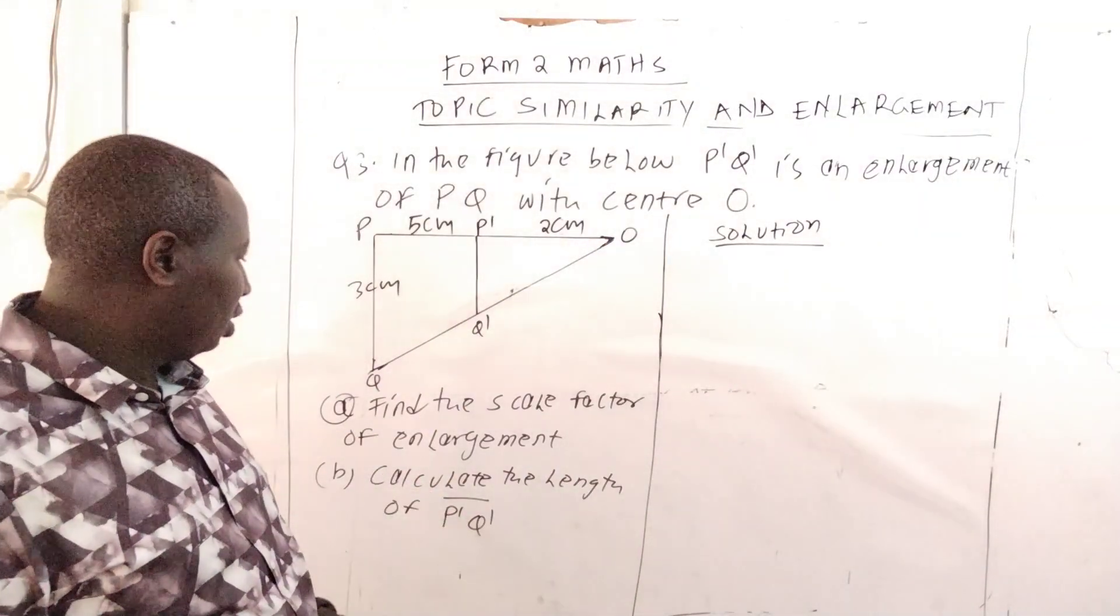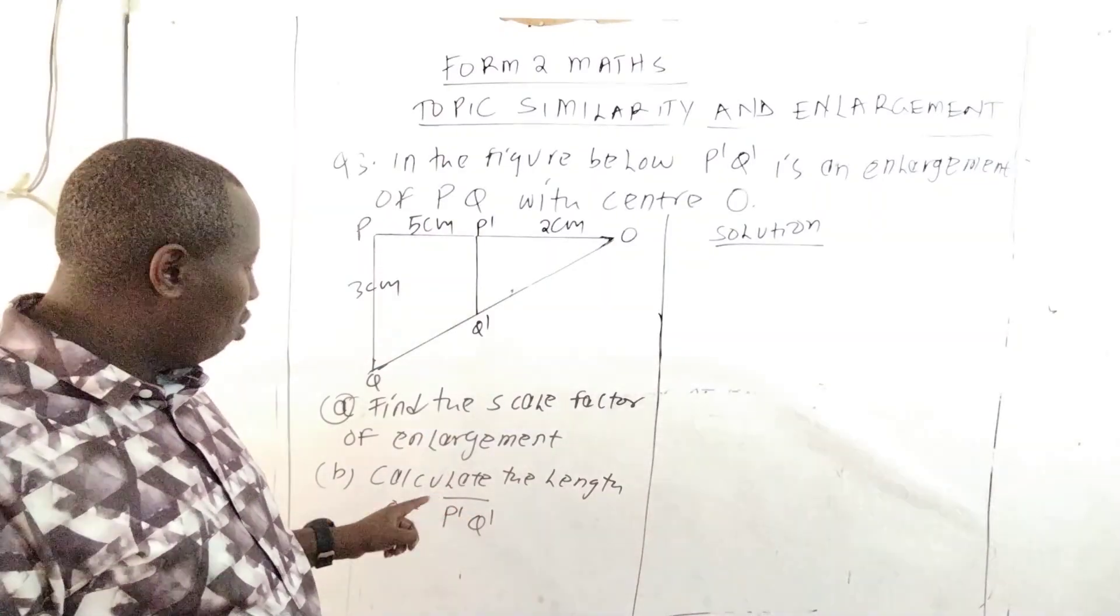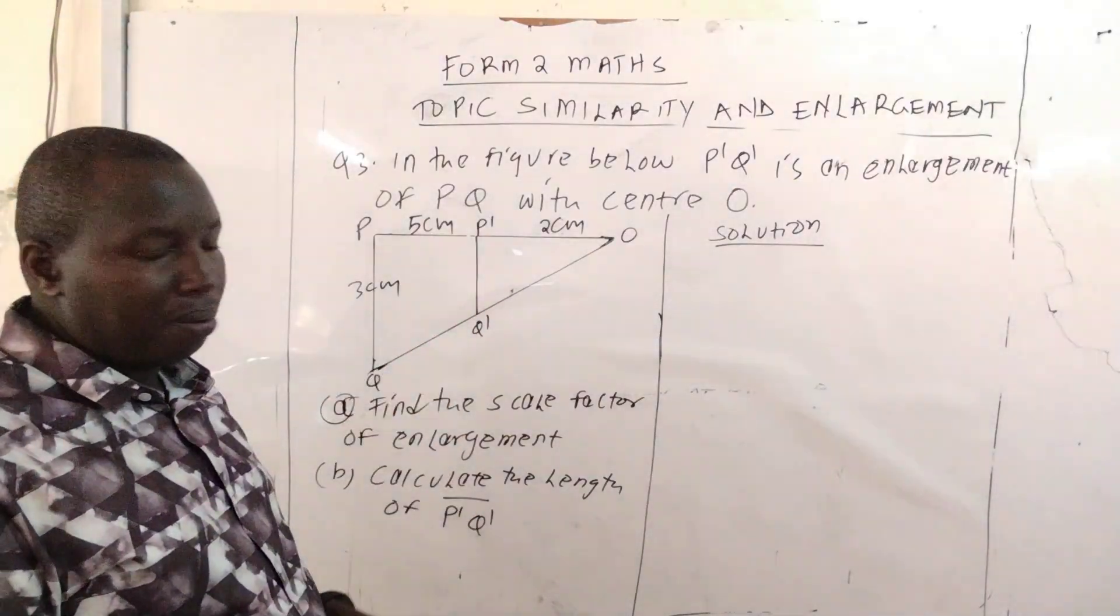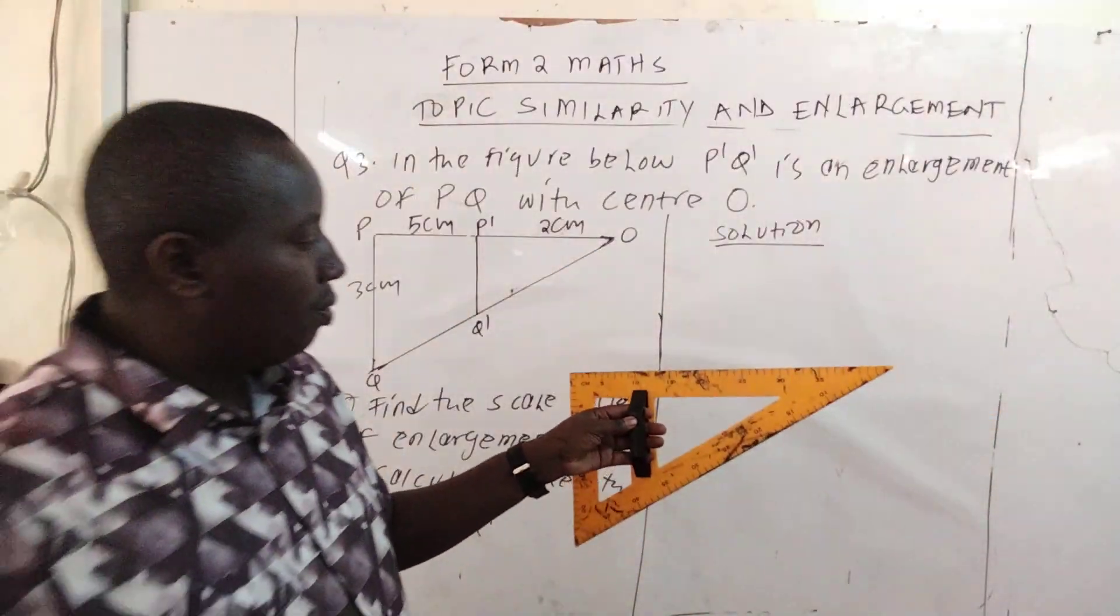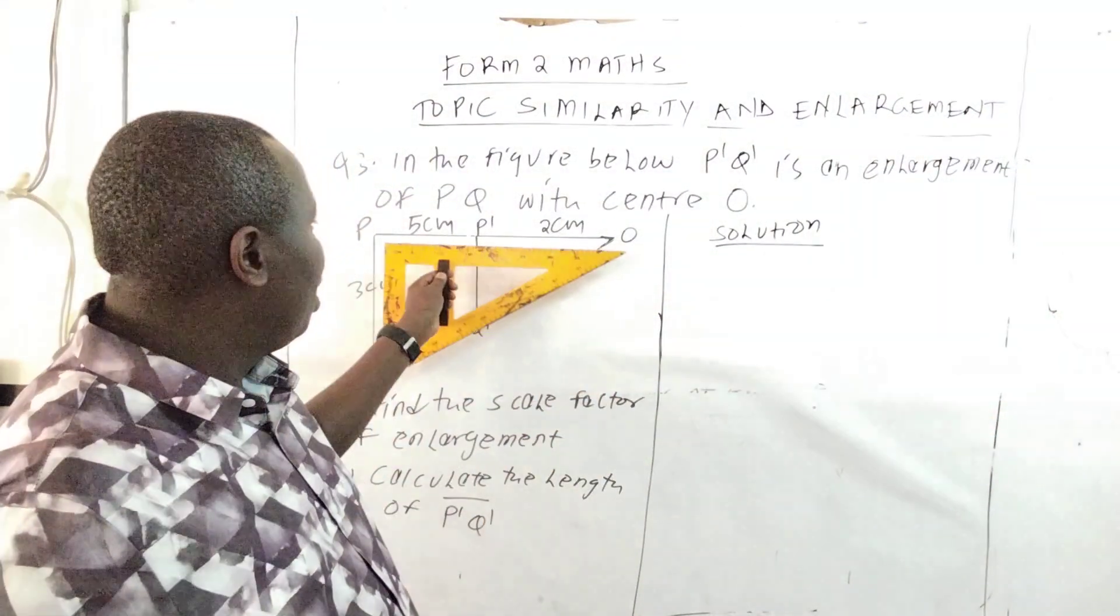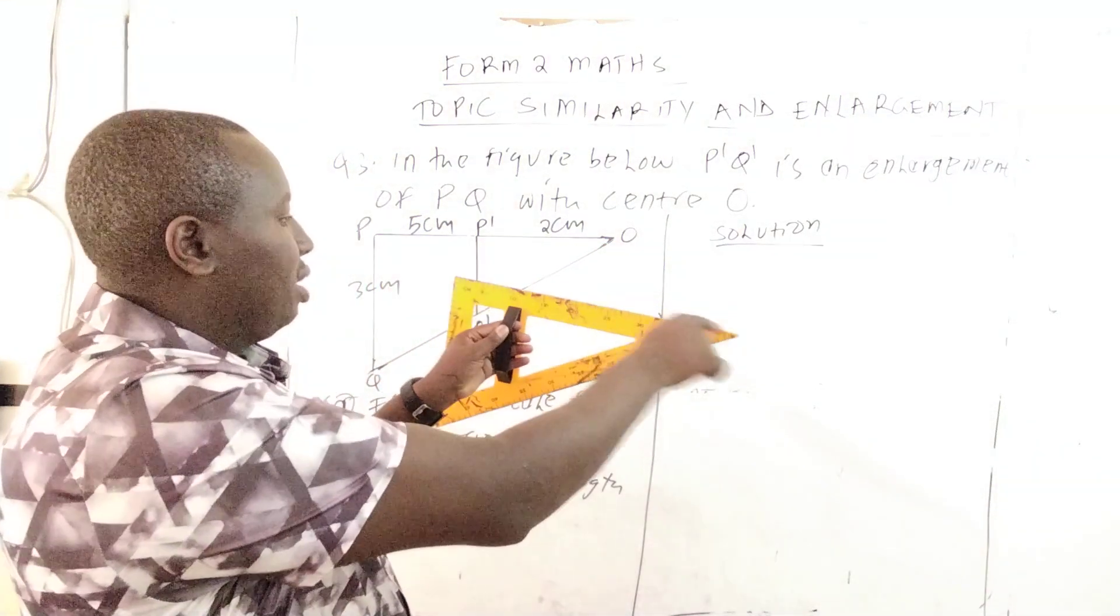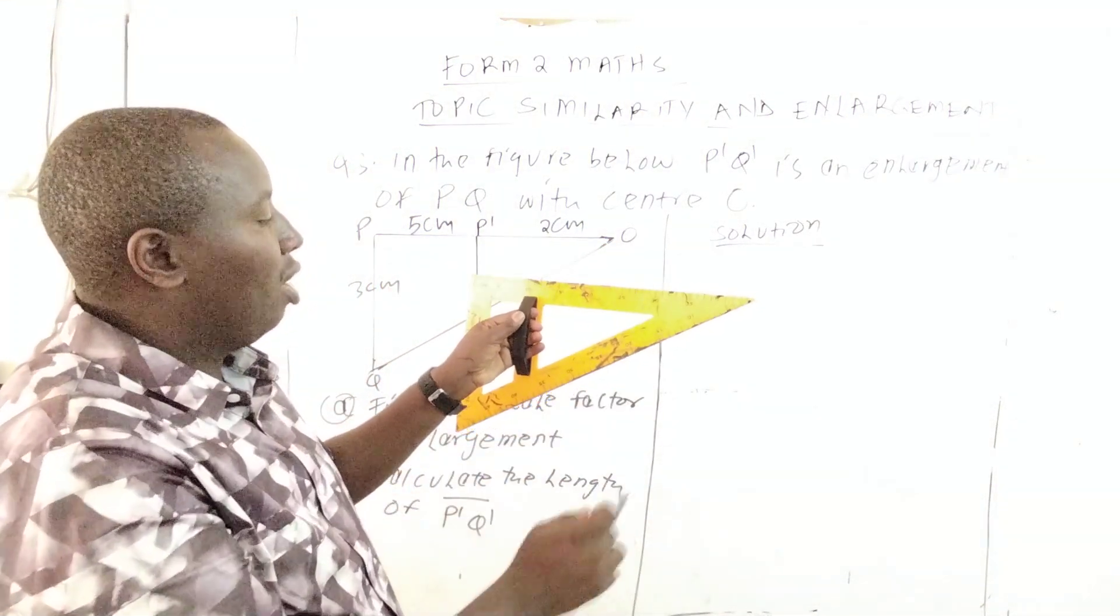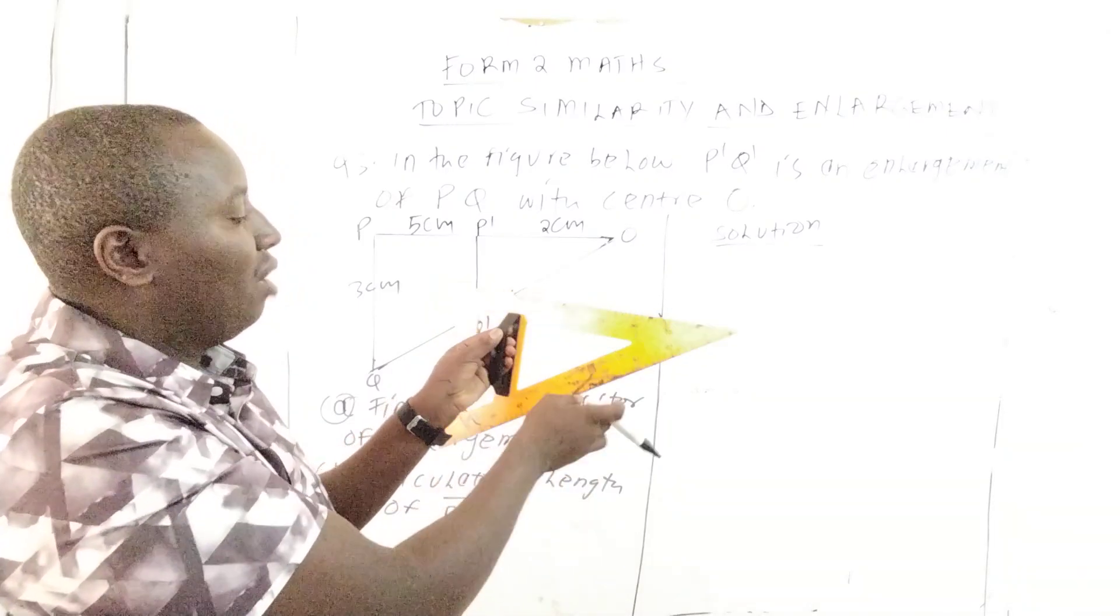We are told to find the scale factor of enlargement and calculate the length of P1Q1. I want to use this right triangle here. We have a small triangle and the largest triangle.